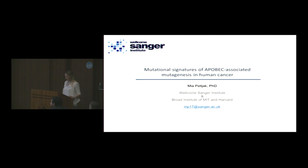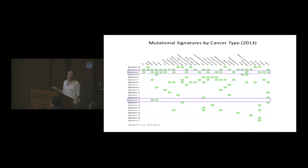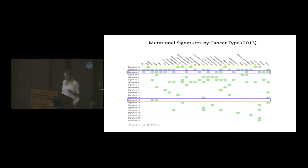The two mutational signatures I'd like to discuss today were first discovered in breast cancer in 2012, but it was really in 2013 when the field was astonished by their relevance. That was when mutational signatures were for the first time extracted across most cancer types available, and these two signatures — signatures 2 and 13 — were found to be highly prevalent. Together, we think they reflect traces of one of the major mutational processes in human cancer.